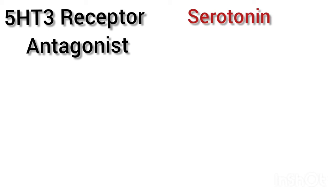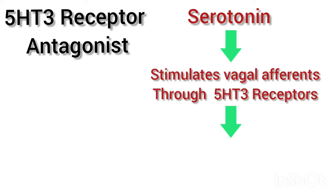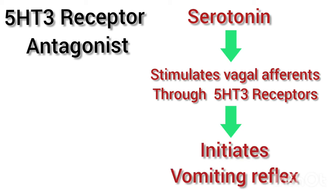How exactly does Ondansetron work? It is a 5-HT3 receptor antagonist. Serotonin is released from the small intestine, which stimulates the vagal efferents through 5-HT3 receptors, which then initiates the vomiting reflex. Ondansetron, by blocking the 5-HT3 receptors, blocks the initiation of the vomiting reflex.